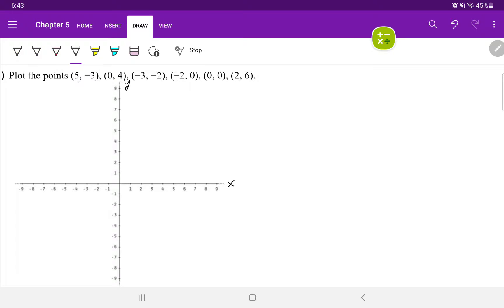The first point is going to be (5, -3). Start at the origin, move five units to the right, move three units downwards. So, five to the right, three down.